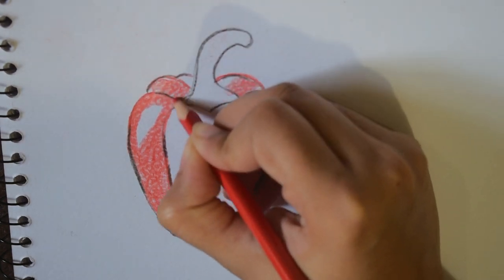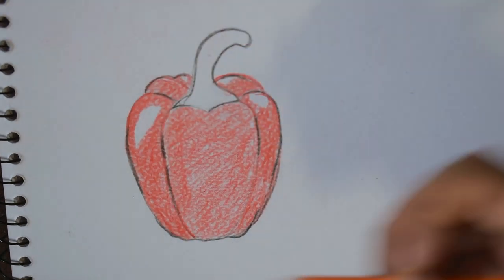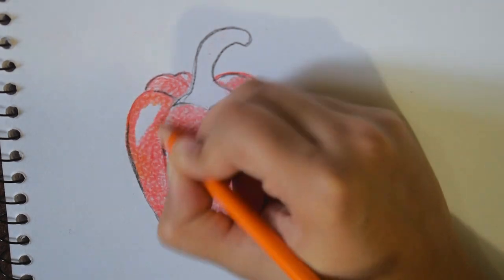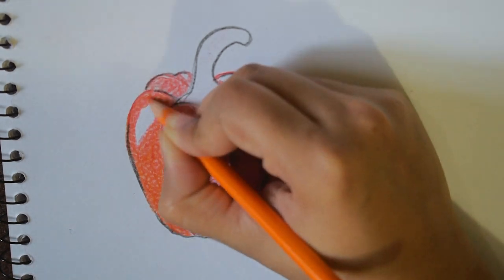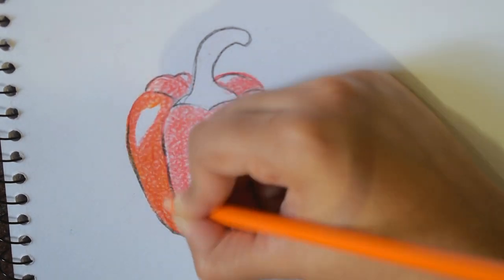Since I'm going to make it look a bit orangish, that's why I'm using red. If you want to make it red, you're going to use maroon as the base color and red on top of it.